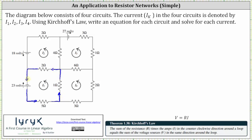Also notice how at the resistor of one ohm on the right, current I sub four is flowing in the opposite direction, which is going to affect our equation. And then at the resistance of two ohms, current I sub two is also flowing in the opposite direction, which will affect our equation for circuit one.